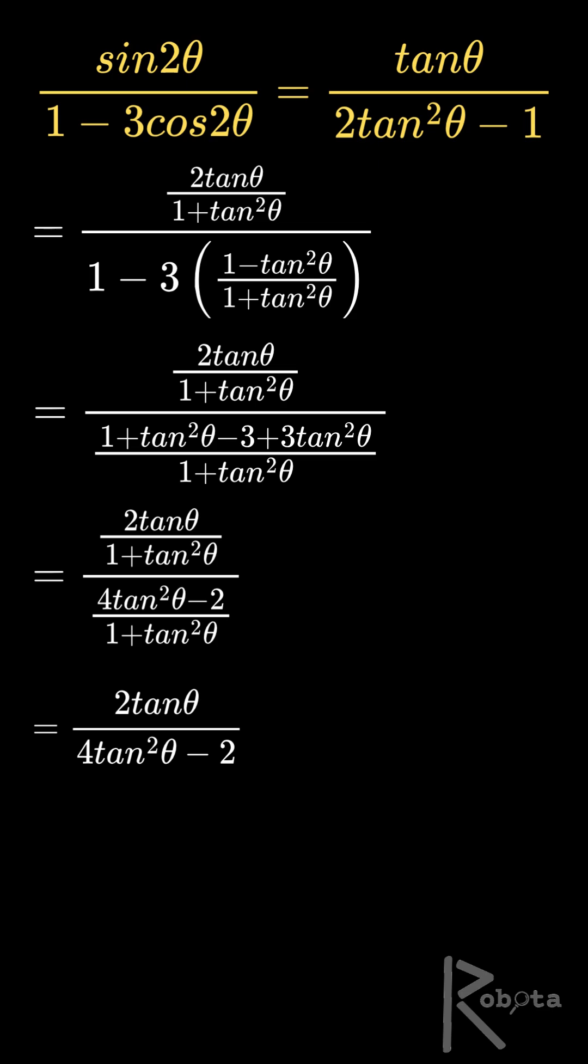Now factor the denominator. We can take out a 2, so it's 2 tan theta over 2 times 2 tan squared theta minus 1. The 2's cancel, and that's exactly the right side. Identity proven. Drop a like if you enjoyed this quick proof.